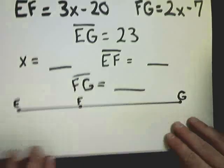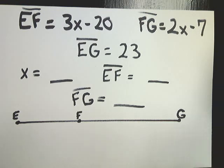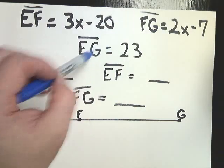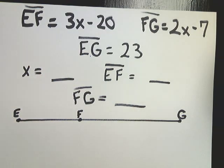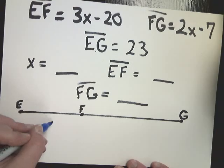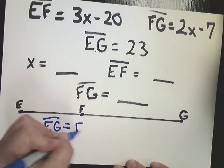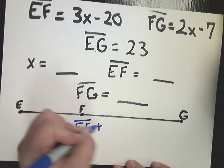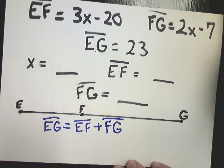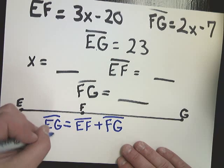One more type that can be confusing but really shouldn't be. I wrote this one out in some scattered fashion but it's not really that complicated. It gives you these three pieces of information and asks about these. So I need to write the statement first. EG is equal to EF plus FG and this said originally when I looked at the problem it said it was not drawn to scale even though I didn't put that here.